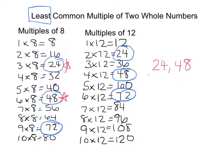You've guessed it. It's going to be 24, because 24 is the lowest common multiple that we found between our multiples of 8 and 12. So 24 would be your least common multiple.